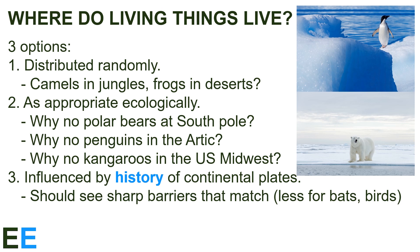Three, species could live in places that they can thrive in, but influenced by the history of continental plates that limit migration. If so, we should see barriers or species distributions that match the tectonic plates and other barriers. And we should probably see these more for mammals, reptiles, or amphibians that don't travel as much, and less for bats and birds. Is this what we see?